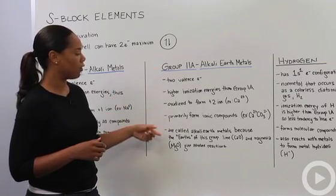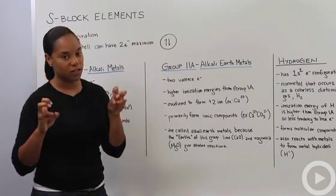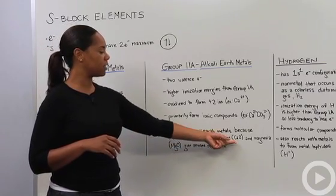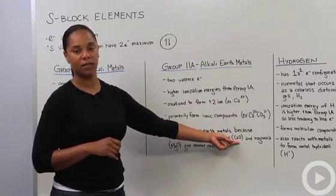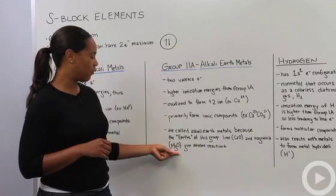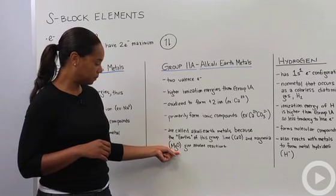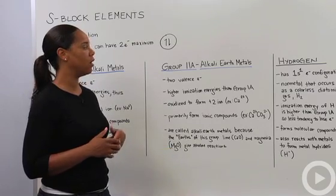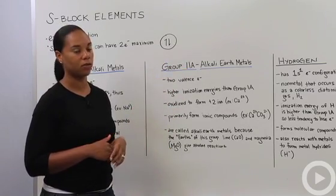These guys are called alkali earth metals because the earths of this group, so the calcium and the magnesium, form lime (calcium oxide) and magnesia (magnesium oxide). These guys make alkaline reactions, so therefore they have the name of alkali earth metals.